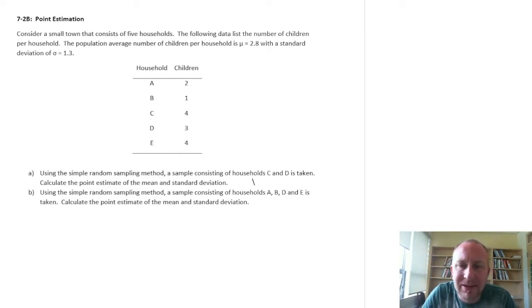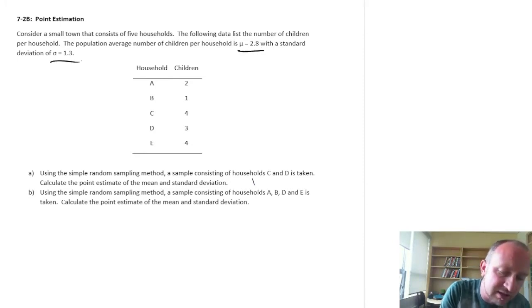Here we're still looking at point estimate of a mean and point estimate of a standard deviation. So we've got a population of five households, number of children per household. We're going to look at average number of children and standard deviation of number of children. Here we have the population parameters, population mean and standard deviations, 2.8 and 1.3.